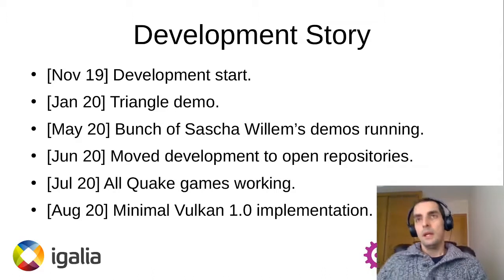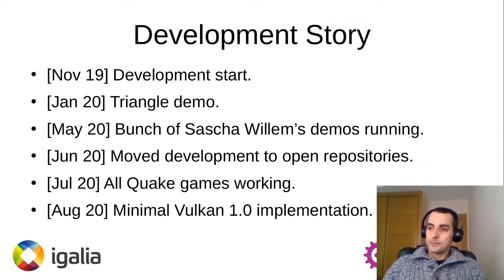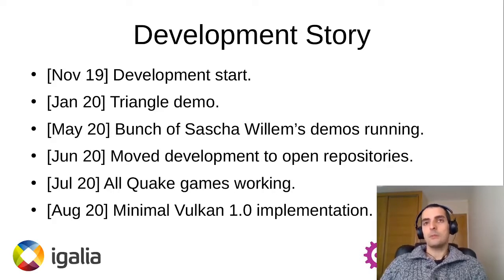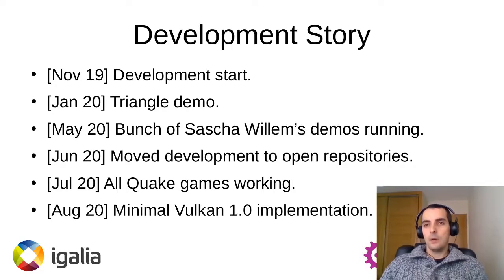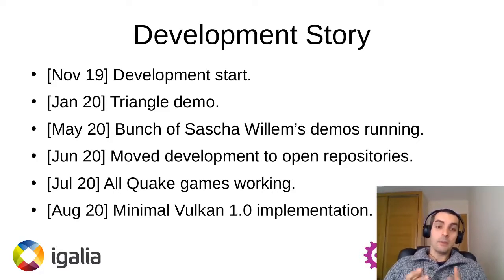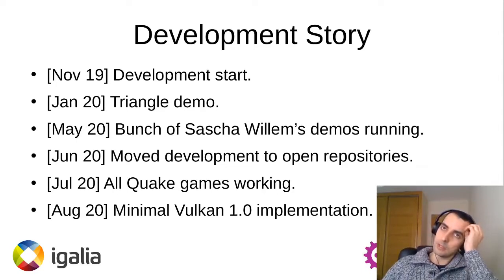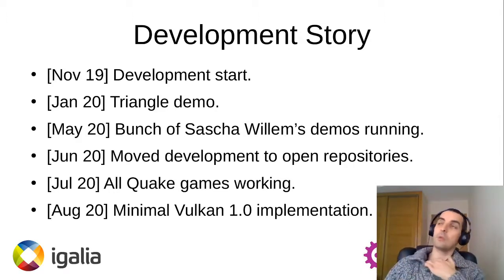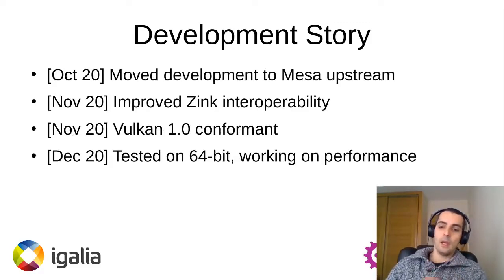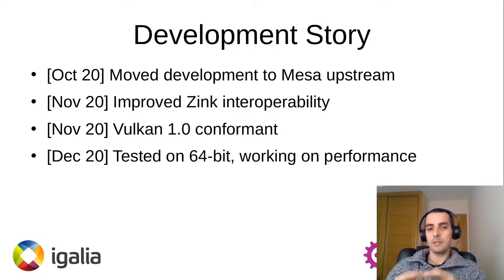Anyone interested could take a look, and we even got some bug reports and some patches at that point. By July, we got all the Quake ports working — that was basically the first real application doing something more than just showing some images. And by August, we got the Vulkan 1.0 implementation without extra features. We still had some bugs and some tests not working, but the implementation of all the features needed for Vulkan 1.0 was done by that point.